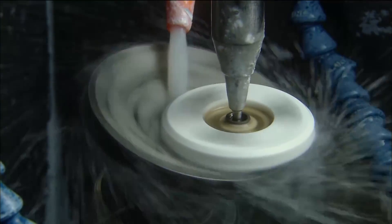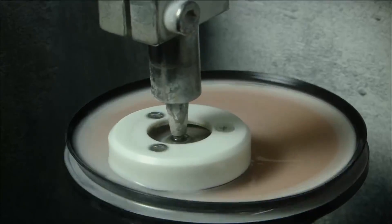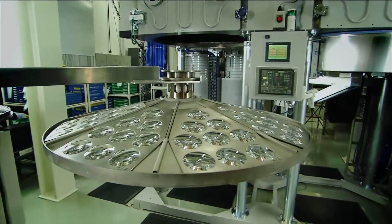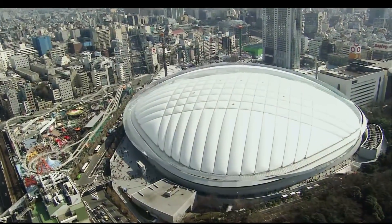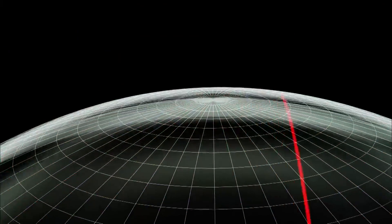Through years of experience, Canon has perfected the polishing process to achieve the highest levels of precision. For example, a polished lens enlarged to the size of a baseball field would have deviations in surface accuracy less than the thickness of a postcard.